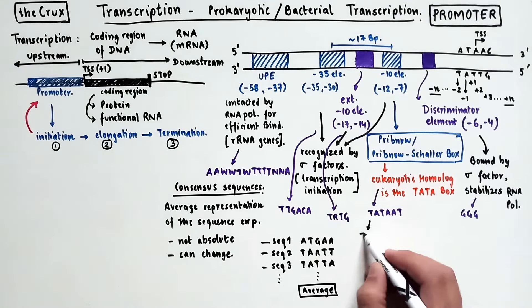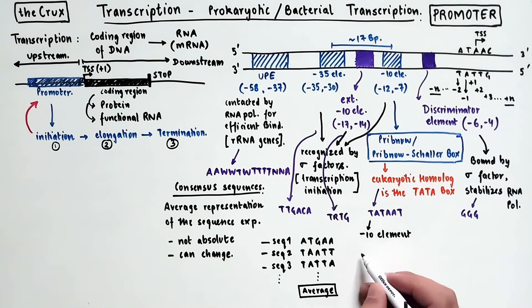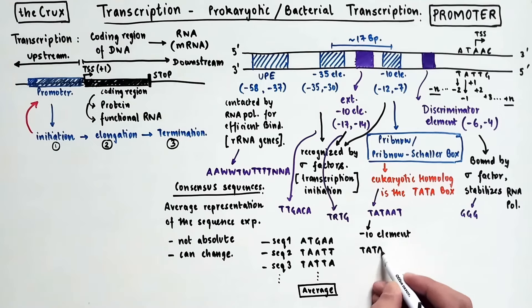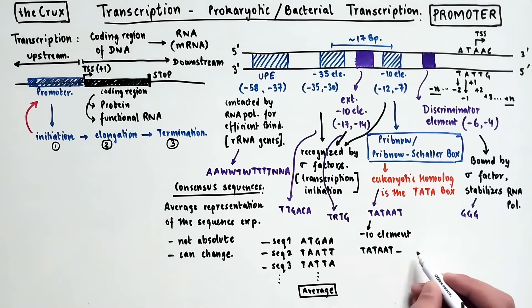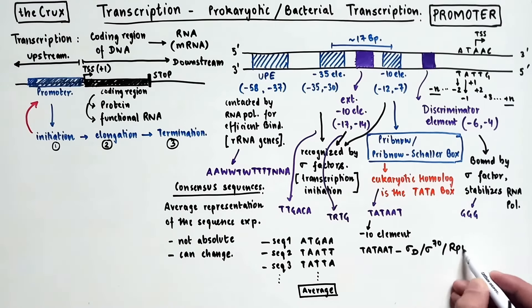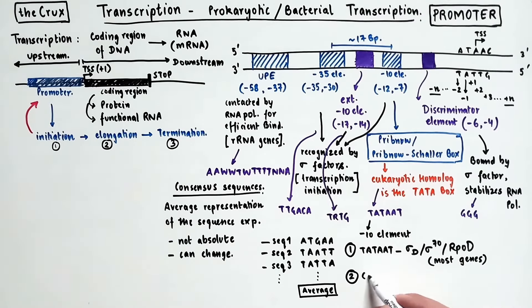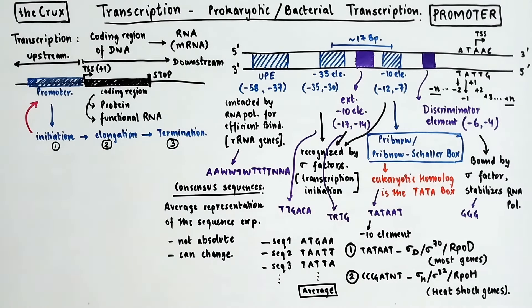To show you what I mean, consider the negative 10 element, whose consensus, as we just said, is Tataat. But that is only true because it is bound by sigma factor D, also known as sigma 70 or RPOD. And because sigma D factor binds most of the genes in prokaryotes, the consensus of Tataat is biased towards it. But when you look at the negative 10 element sequence of certain sigma H bound genes, and these are usually the heat shock genes, you find a completely different consensus.